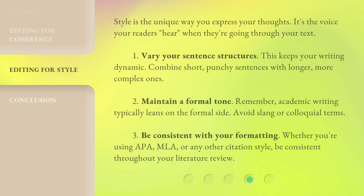Style is the unique way you express your thoughts. It's the voice your readers hear when they're going through your text. First, vary your sentence structures — this keeps your writing dynamic. Combine short, punchy sentences with longer, more complex ones. Second, maintain a formal tone. Remember, academic writing typically leans on the formal side. Avoid slang or colloquial terms. Third, be consistent with your formatting. Whether you're using APA, MLA, or any other citation style, be consistent throughout your literature review.